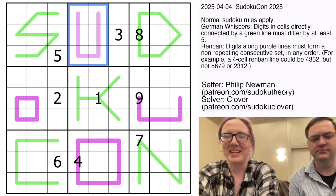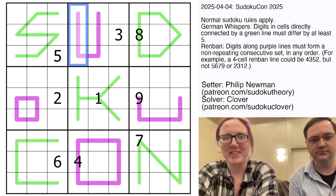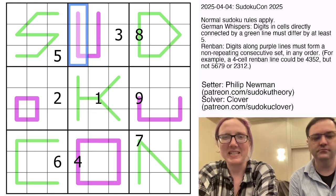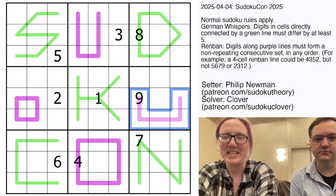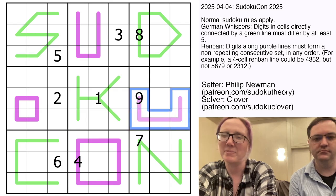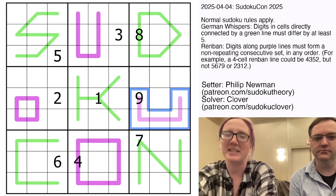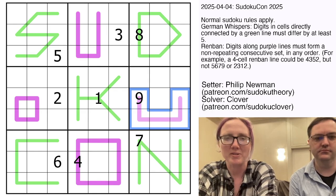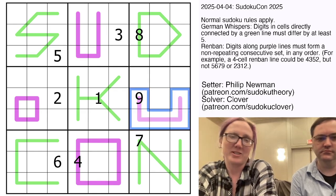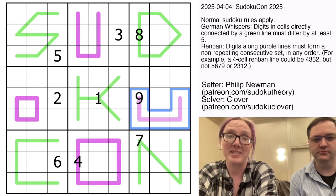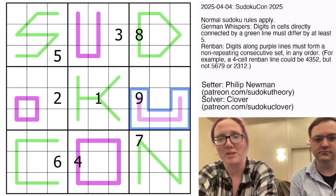So the Renbon colored lines are Renbon lines. Digits along each of these purple, pinky lines represent a set of consecutive numbers like two, three, four, five, but they can appear mixed up in any order. So this just has to have the digits five, six, seven, eight, nine on it, for example, because we know it has a nine.